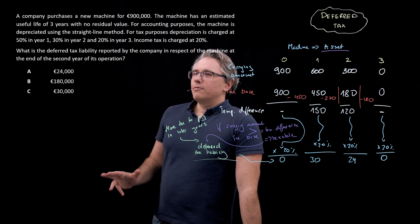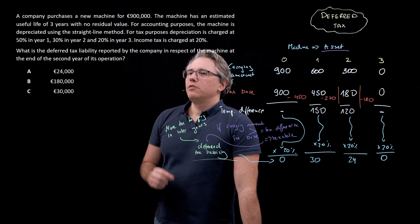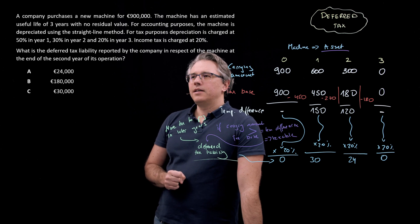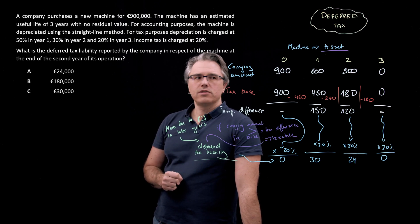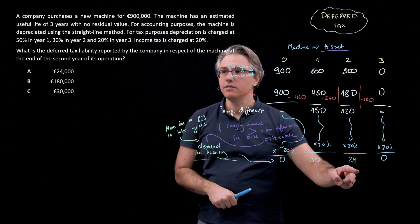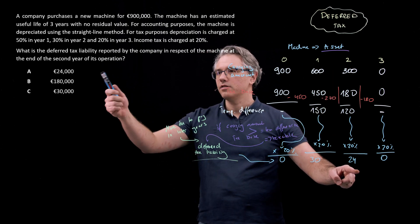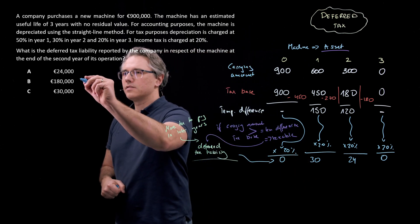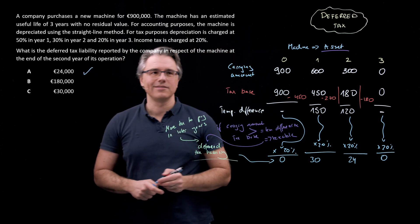What's the answer to the question? What is the deferred tax liability reported by the company in respect of the machine at the end of the second year of its operation? Second year is over here, and we've got 24. And that corresponds to answer A. So answer A would be the correct answer to this question.